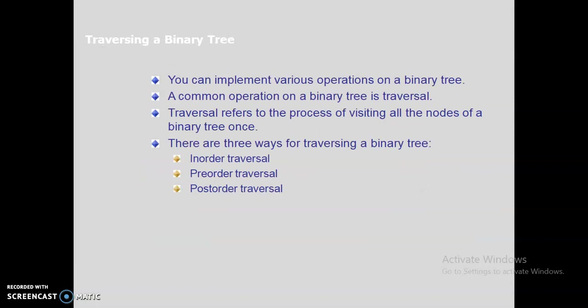There are many operations in a binary tree — you can search an element, insert, or delete. The condition for a binary tree is that a node should have at most two children — it can have zero, one, or at most two children. When an element is there you can check whether it has a left child or a right child and then move to the next level. The important operation here is the traversal of a binary tree.